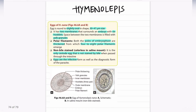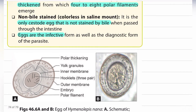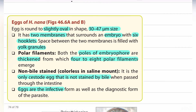Next, we are going to discuss about Hymenolepis nana. The eggs of H. nana are slightly oval with a size of 30 to 47 micrometers. There are two membranes present — an outer and inner membrane — and four pairs of flagella, which may be four to eight in number. There are three central hooklets present within the outer membrane, and an embryo is also present. Importantly, H. nana eggs are both the infective form and the diagnostic form of the parasite.